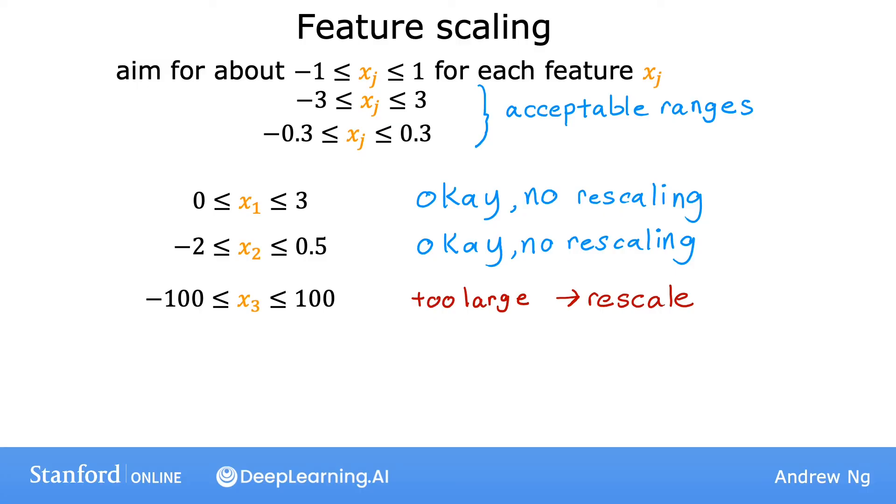Similarly, if you have a feature x4 that takes on really small values, say between negative 0.001 and plus 0.001, then these values are so small that means you may want to rescale it as well. Finally, what if your feature x5, such as measurements of a hospital patient's body temperature, ranges from 98.6 to 105 degrees Fahrenheit. In this case, these values are around 100, which is actually pretty large compared to other scaled features, and this will actually cause gradient descent to run more slowly. So in this case, feature rescaling will likely help.